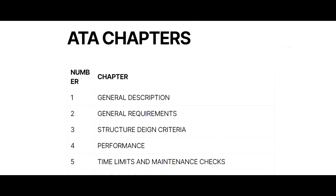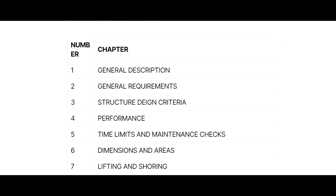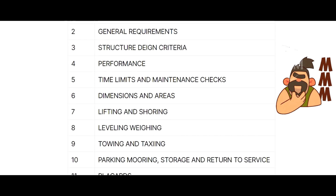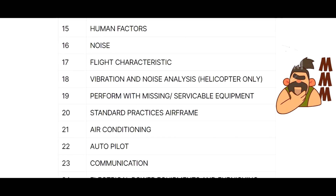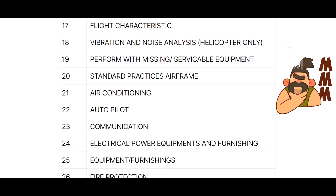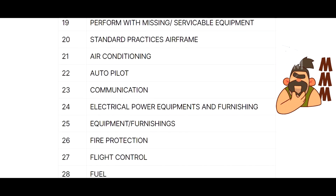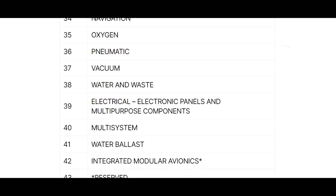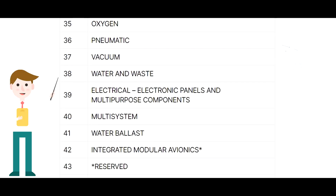Here are some of the list of ATA chapters. Now let's start to discuss about Chapter 38, the water and waste system of an aircraft.